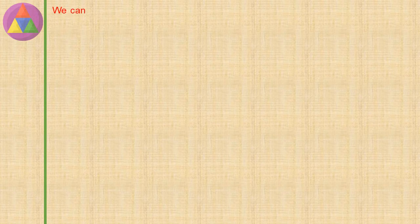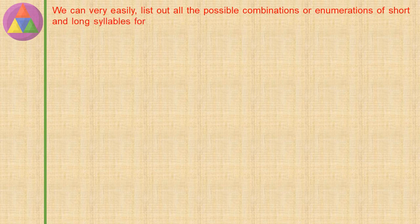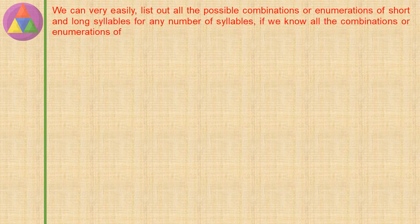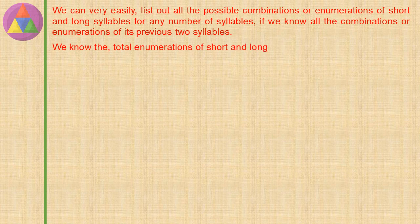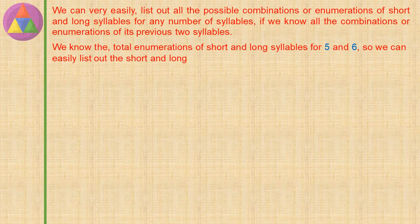We can easily list out all the possible combinations or enumerations of short and long syllables for any number of syllables if we know all the combinations of its previous two syllables. Knowing the total enumerations for 5 and 6 syllables, we can easily list out the enumerations for 7 syllables.